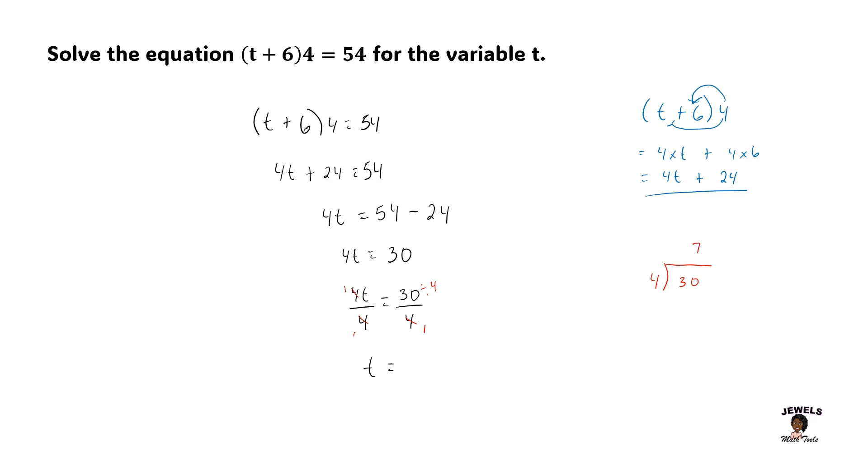So 4 goes into 30 seven times. 7 times 4 is equal to 28. 30 minus 28 will leave us with a difference of 2. And we are going to move into decimal numbers. I'm inputting my decimal point behind my dividend and also behind my 7, which is in my quotient. I'm going to add in my 0, bring down that 0, changing 2 into 20. And then 4 divides into 20 five times. 5 times 4 is 20. And 20 minus 20 will equal to 0. So now that I have found that when I divide 30 by 4, it's equal to 7.5, I'm now going to conclude that my t is equal to 7.5.